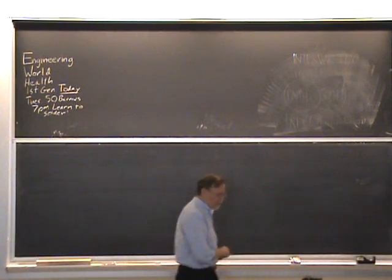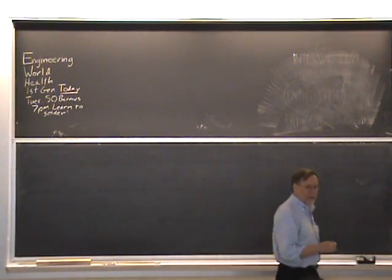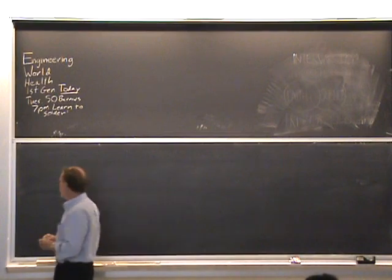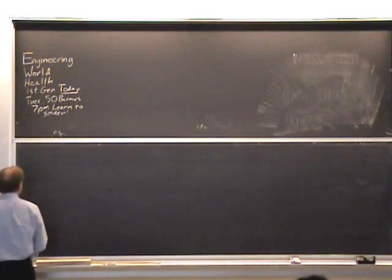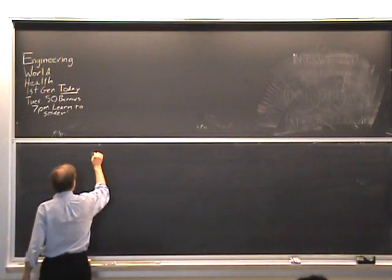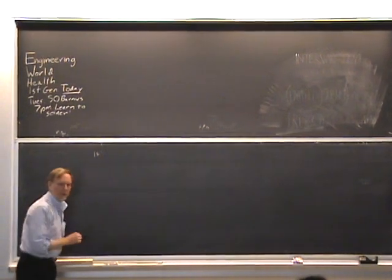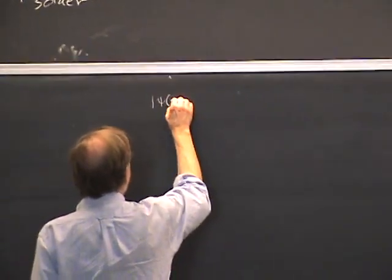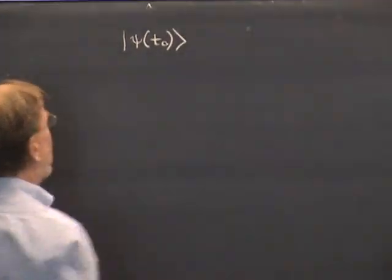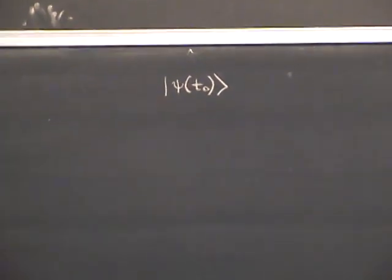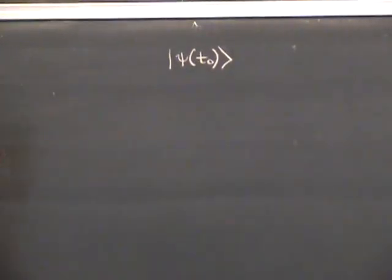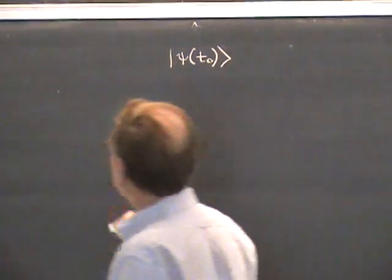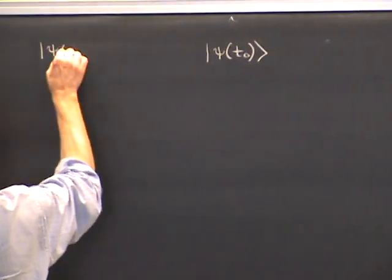The topic for today is time evolution and quantum mechanics, which we haven't talked about so far. Let's suppose the state vector of a system — we'll be speaking here of a pure state, so it's described by a state vector — at some initial time is psi(t0). State vectors evolve in time, so at a later time there's a different state vector, let's call it psi(t).